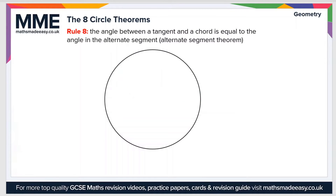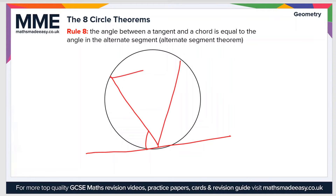The final rule is the alternate segment theorem — the hardest to spot and the hardest to get your head around; it just takes practice. Drawing a tangent and then a chord, the angle formed between the tangent and the chord is equal to the angle in the alternate segment. So angle x on one side equals angle x in the alternate triangle, and likewise angle y equals angle y. You just need to get familiar with it.